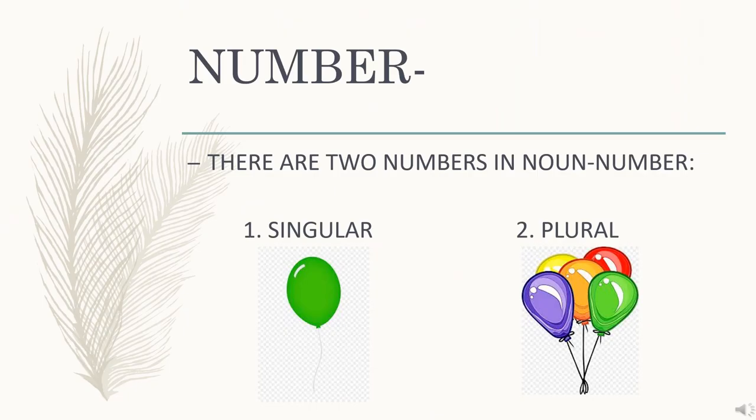There are two types of numbers in noun number. Number 1, singular number. Number 2, plural number.